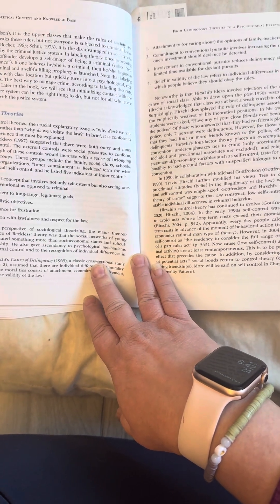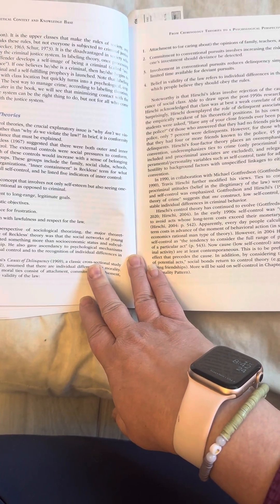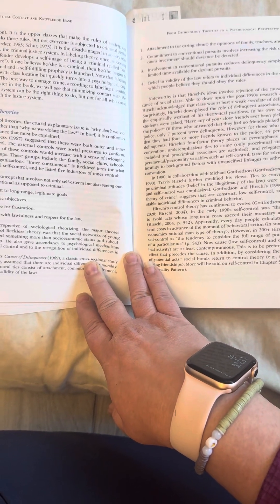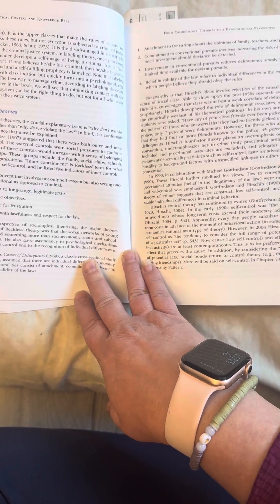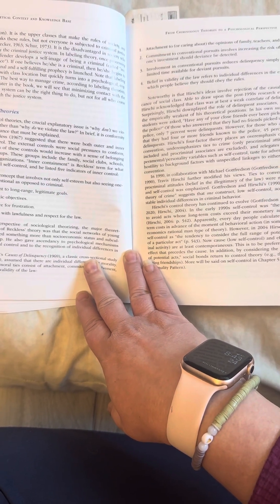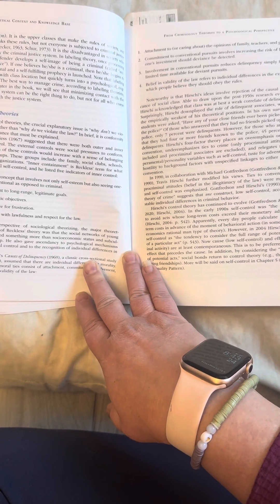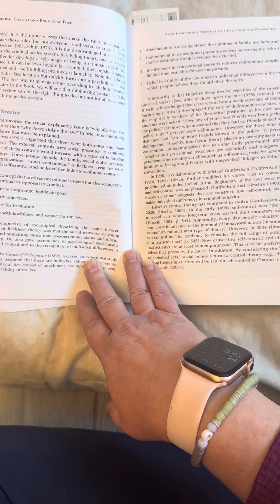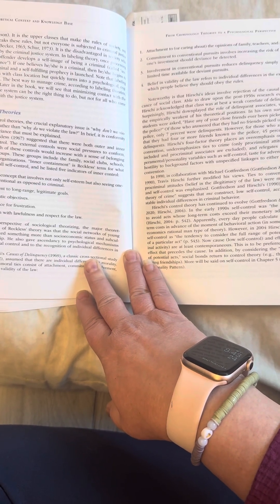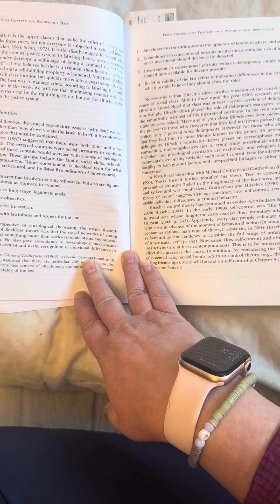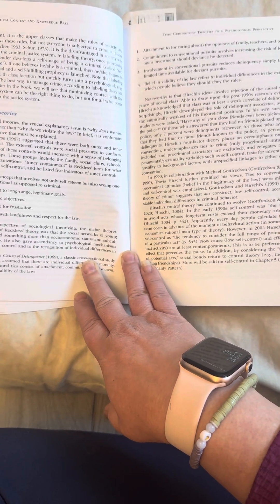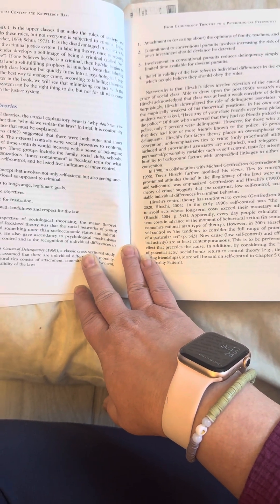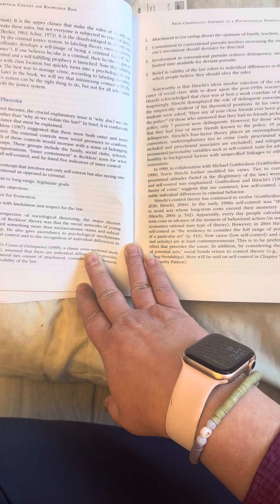Walter Reckless, 1967, suggested that there were both outer and inner sources of control. The external controls were social pressures to conform, and the strength of these controls would increase with a sense of belonging to pro-social groups. These groups include the family, social clubs, schools, and religious organizations. Inner containment is Reckless' term for what psychologists call self-control. And he listed five indicators of inner control.